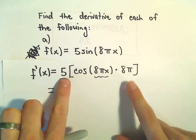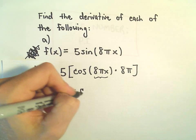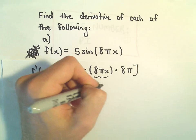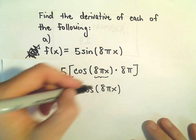And now if we multiply, 5 times 8π will be 40π. And then we have cosine of 8πx left over. And that's our derivative.